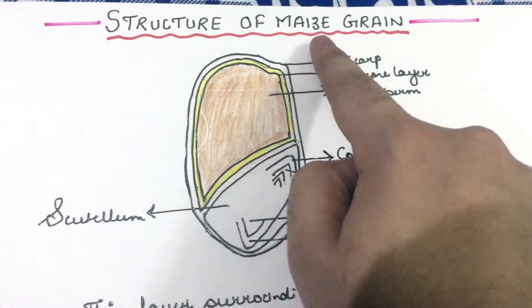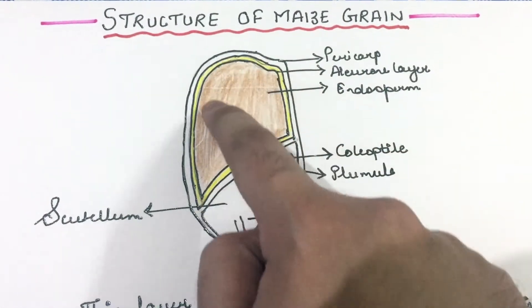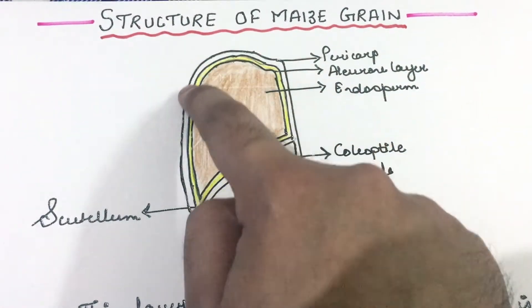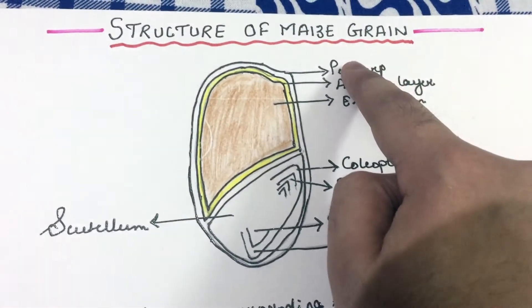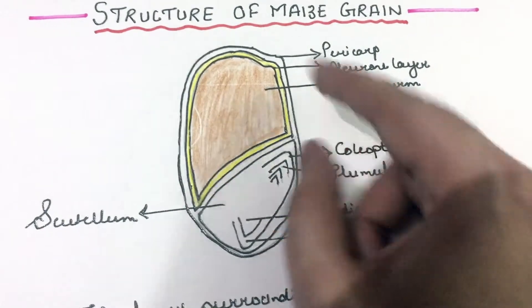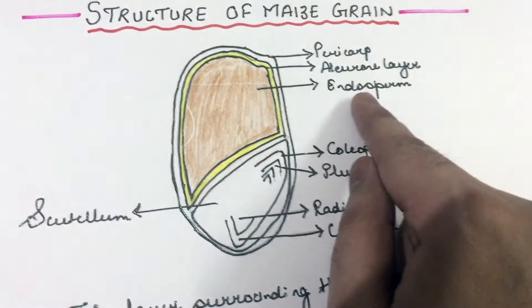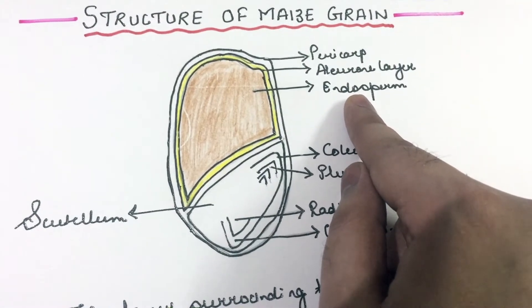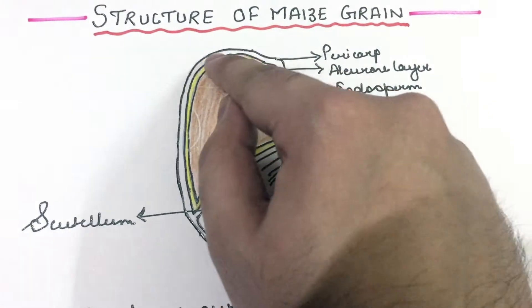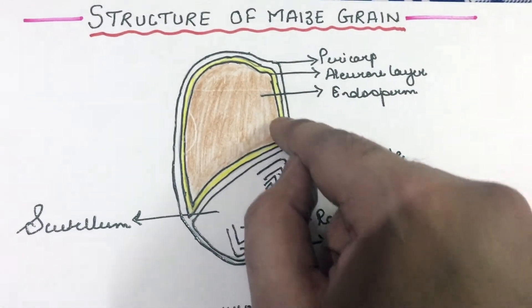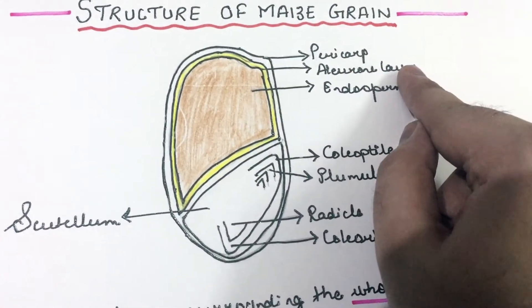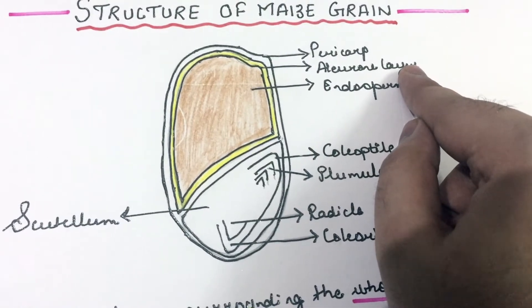Now let us look at the structure of maize grain. The outer layer surrounding the whole grain is called the pericarp. The bigger portion inside is the endosperm, which is rich in starch. The endosperm has an outer layer, marked in yellow, which is called the aleurone layer. This aleurone layer is rich in proteins.